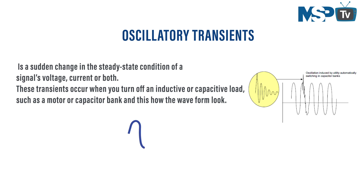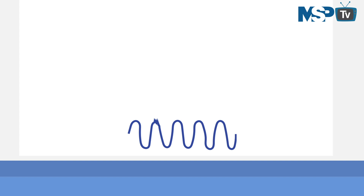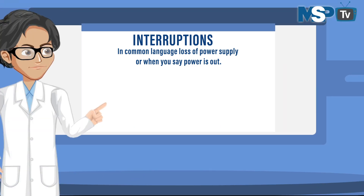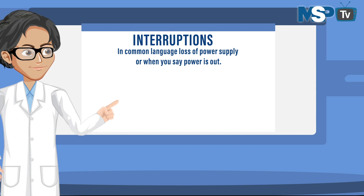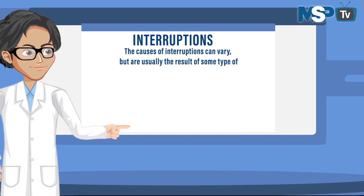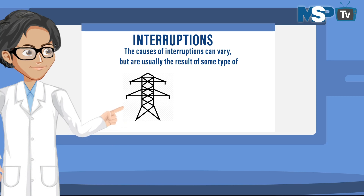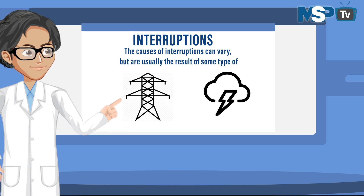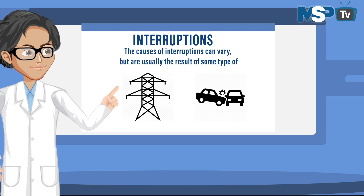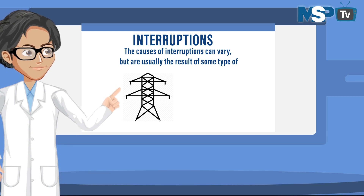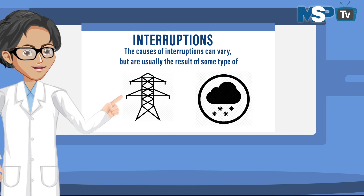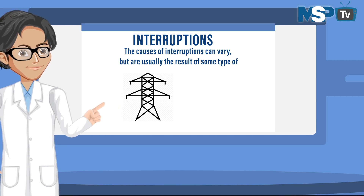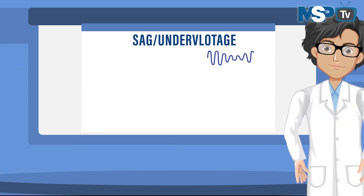This is how the waveform looks. The second type of problem is interruptions — in common language, a loss of power supply, or when the power is out. The causes of interruptions can vary but are usually the result of electrical supply grid damage such as lightning strikes, animals, ice, vehicles, accidents, destructive weather like high winds or heavy snow, equipment failure, or basic circuit breaker tripping.